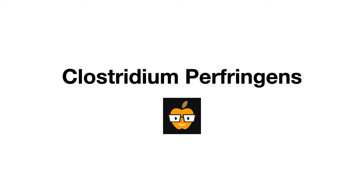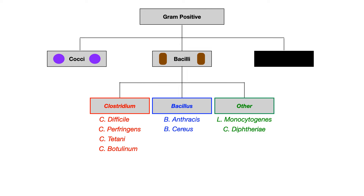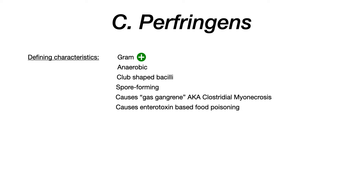In this video, we'll talk about Clostridium perfringens. Recall from the previous video that when we talk about gram-positive bacteria, we subdivide based on the shape of the organism. Recently, we've started talking about bacilli, which we can further subdivide into Clostridium, Bacillus, and Other. In the previous video, we talked about C. diff, and in this video we'll talk about C. perfringens. This is a pretty easy one compared to other bacteria because there's really only one major clinical association and virulence factor you need to know.